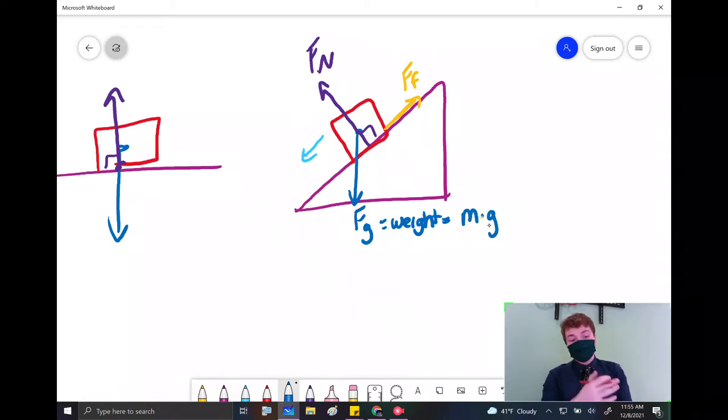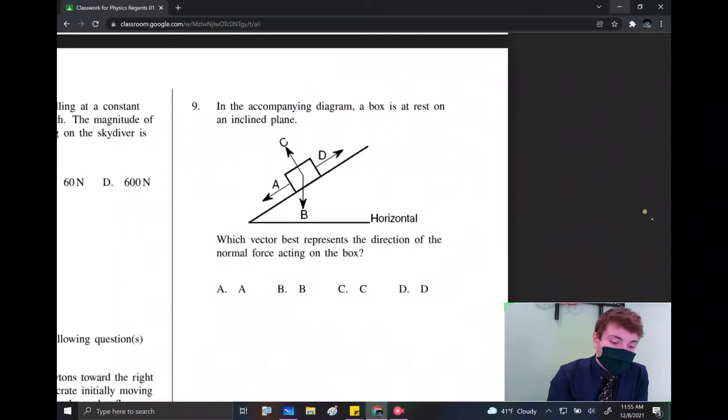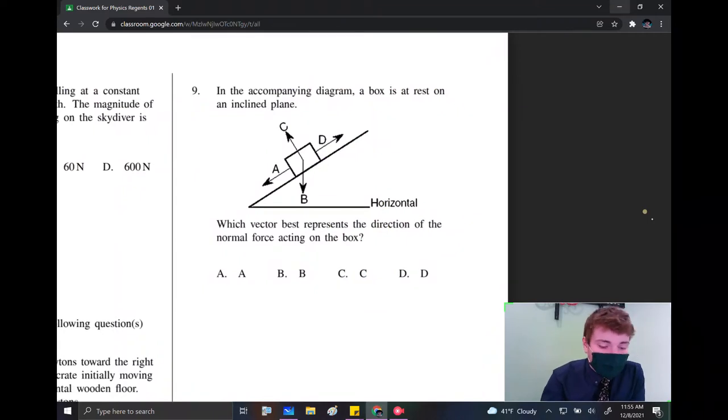So what we need to do is we need to look for the option that looks most like this. So we know normal force. Oh, it's just asking for the direction of normal force. Okay, well then that would be C.